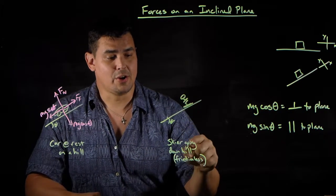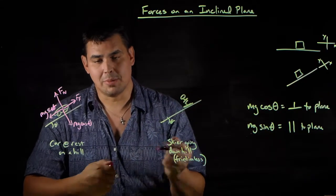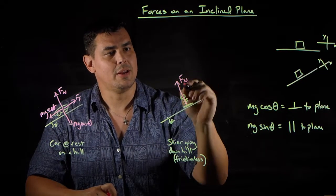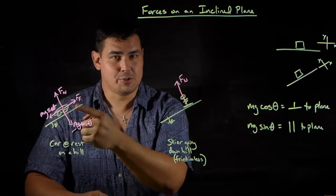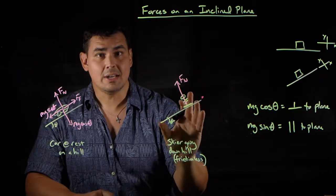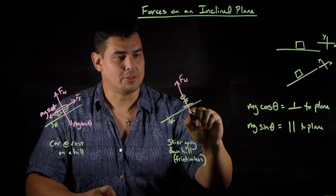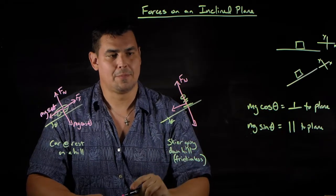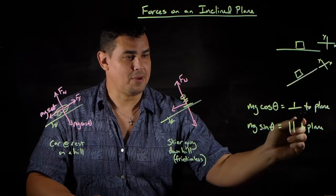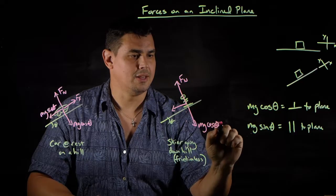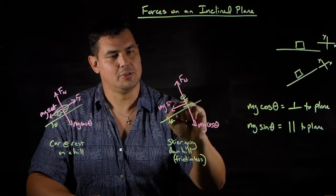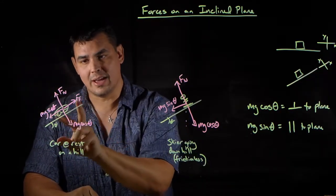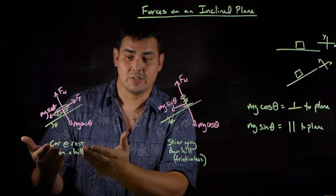Now a skier going down a frictionless hill. Draw the easy forces first: the normal force points away from the ramp, and there's no friction. Then draw gravity broken into its components — one pointing into the ramp and one pointing down the ramp. This gives mg cosine theta perpendicular and mg sine theta parallel. In the car example, all forces cancel out — that's why the car is at rest.